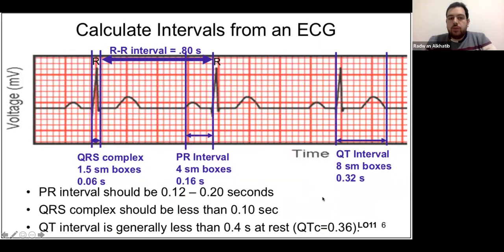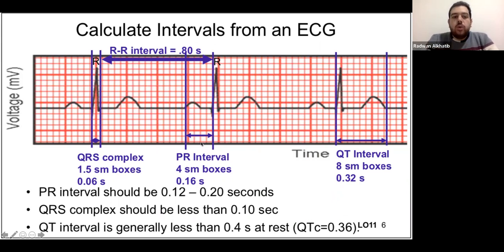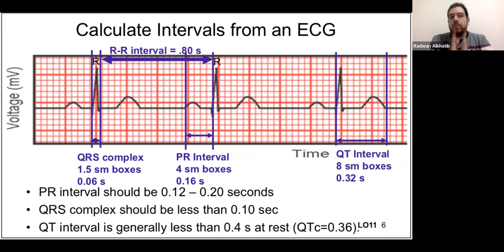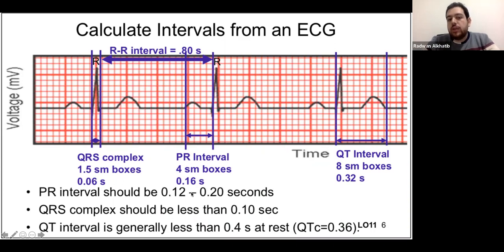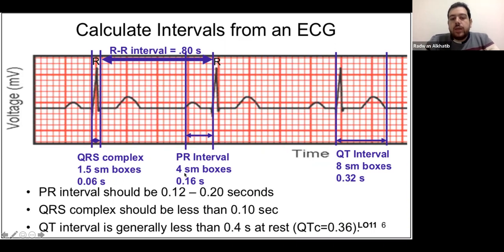The second step in ECG methodology is calculating the intervals. We need to make sure all ECG intervals are within their standard limits, because if any interval exceeds its standard time, a pathology is present. The PR interval should be between 0.12 and 0.2 seconds — that's three to five small boxes, or three small boxes and one large box.